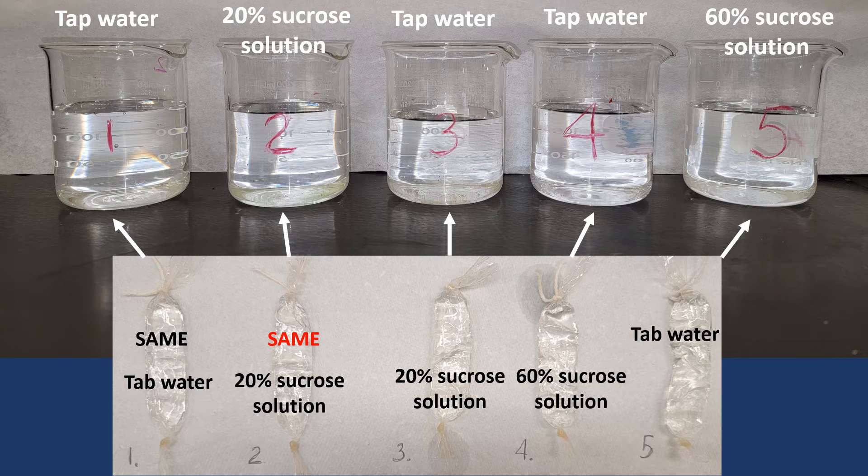If we submerge dialysis bag number three filled with 20% sucrose solution into beaker number three containing tap water, will the bag mass increase, decrease, or stay the same? Again, think. Is the solution in beaker three hypotonic, hypotonic, or isotonic? You are correct. It is hypotonic. Therefore, over time, the molecules of water will rush into the bag from the beaker. This will cause an increase in bag mass.